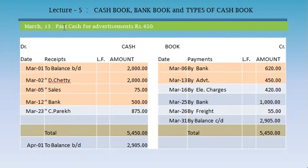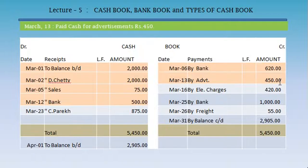March 13: paid cash for advertisement, Rs. 450. This is a payment in cash, so on the cash book we record it on the credit side: March 13, by advertisement, Rs. 450.